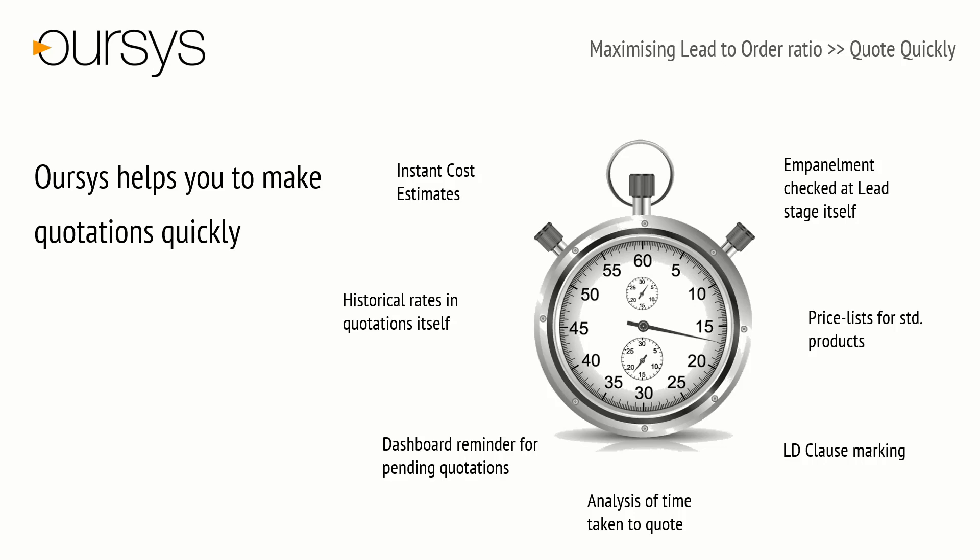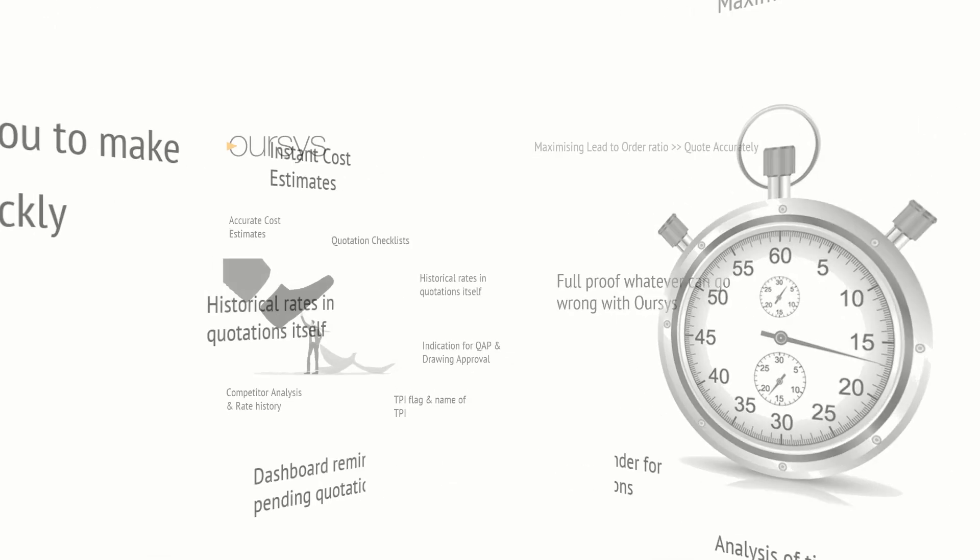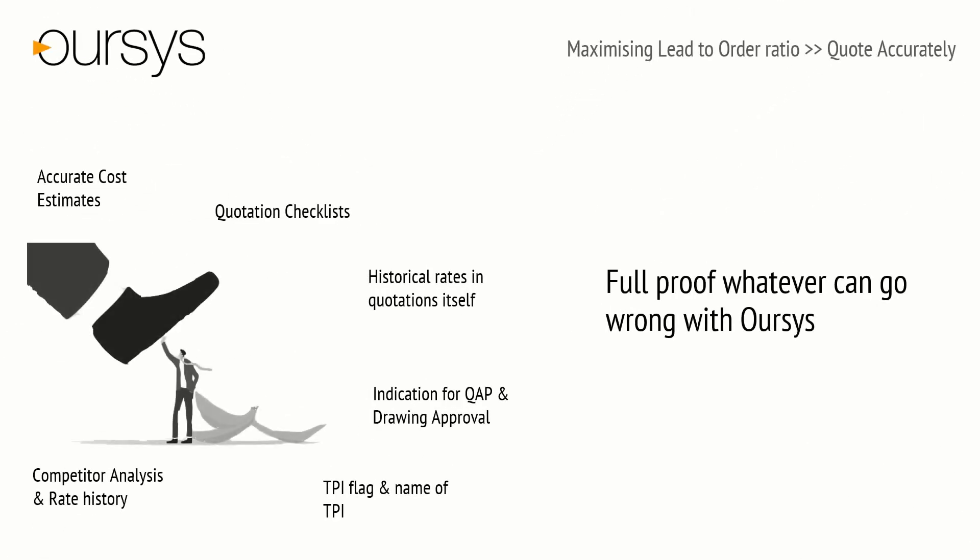Amendment provision gives a history of changes. Overseas gives accurate cost estimation provision for reducing human errors and lead time between inquiry and quote. At the quotation level, a checklist provision reminds users of important points. At the time of quotation making, users must focus on key checkpoints like historical rate, checklist, TIP or QIP approval, authentication, TPA flags, and competitor rate analysis. These checkpoints help us to prepare accurate quotations.